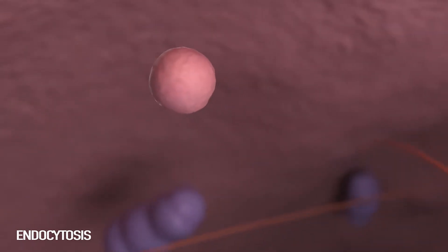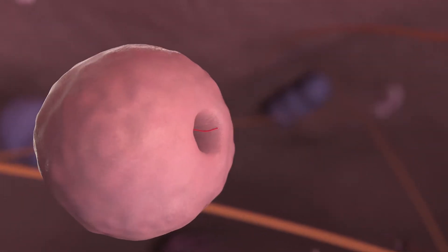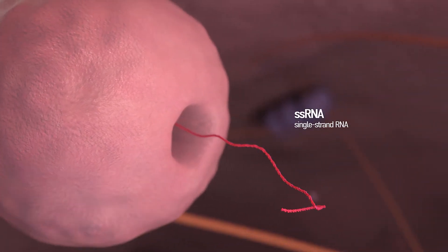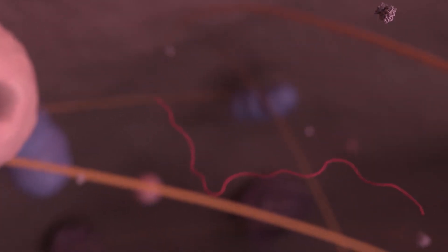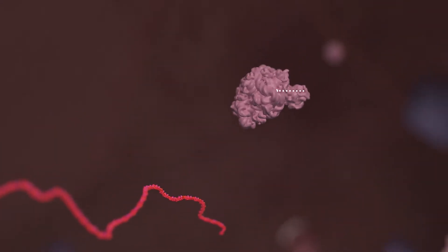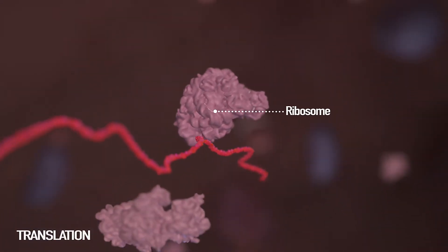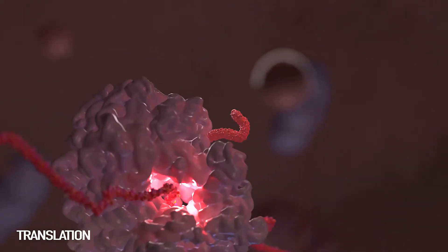After viruses invade the host cell, they release a blueprint called single-stranded RNA containing their genetic information into the cytoplasm. This single-stranded RNA self-replicates and uses the ribosome of the host cell to make proteins, which are parts of the virus.